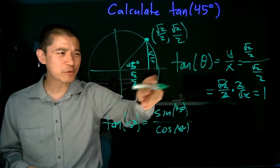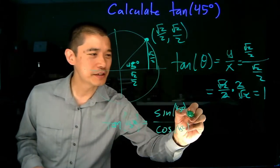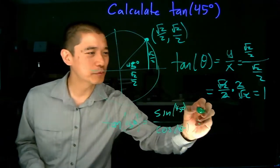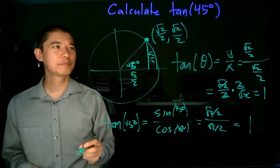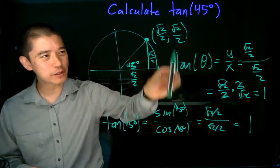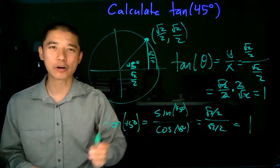Now, for that, you can use either your memorized values from the unit circle, or you can just do the geometry here. Either way, you get the same result, root 2 over 2 over root 2 over 2, which is 1. So here we reconstructed the entire triangle, and here we relied on memorized values to do the more algebraic approach.